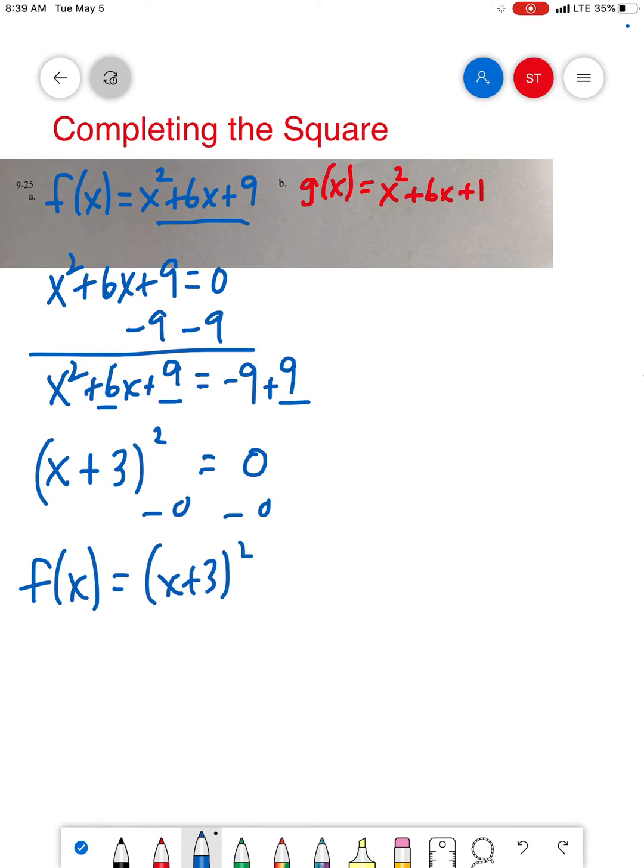That is graphing form. What's the vertex? Remember it's the opposite sign of positive 3, so it's negative 3 and there's nothing over here, so it's negative 3, 0 would be my vertex. Let's do one more.